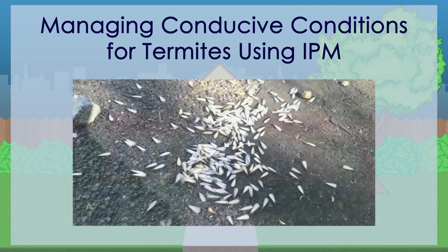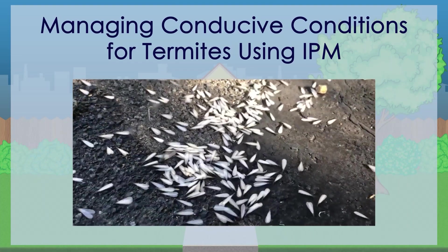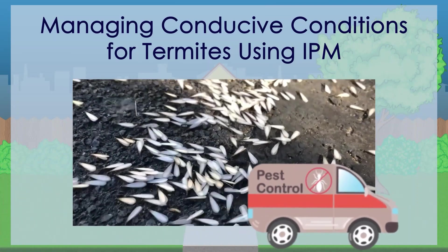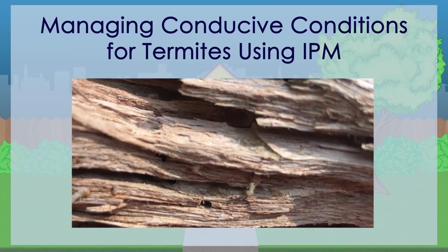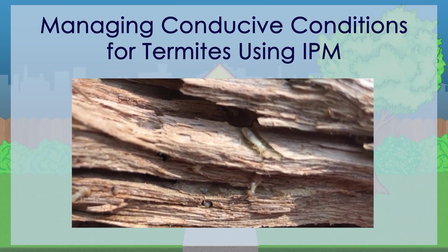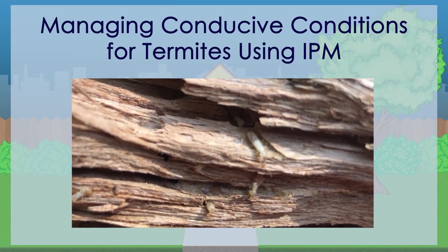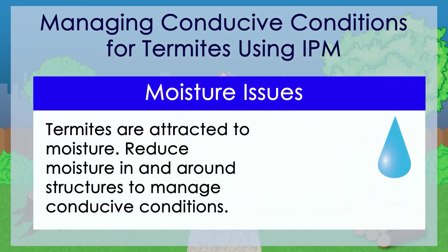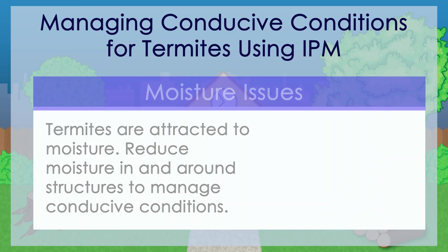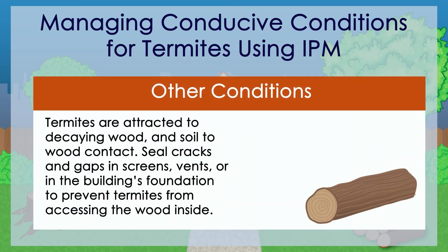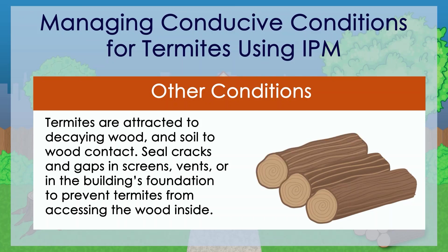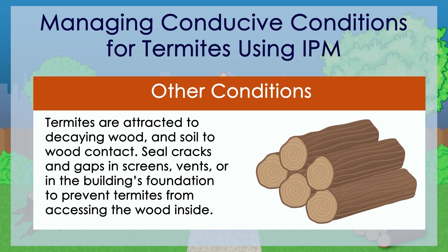If you suspect termites are damaging a structure, consider having a professional inspect the area. However, there are things you can do to reduce conditions that may attract termites. Termites are attracted to moisture, so reduce moisture in and around structures. Termites are also attracted to decaying wood and soil-to-wood contact. Seal cracks and gaps in screens, vents, and the building's foundation to prevent termites from accessing the wood inside.